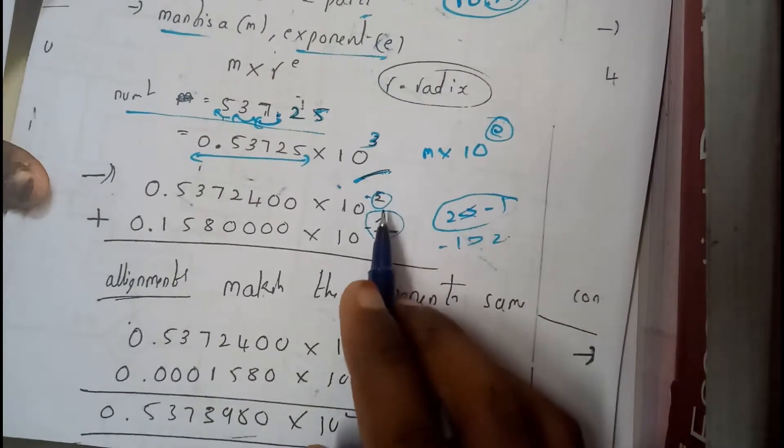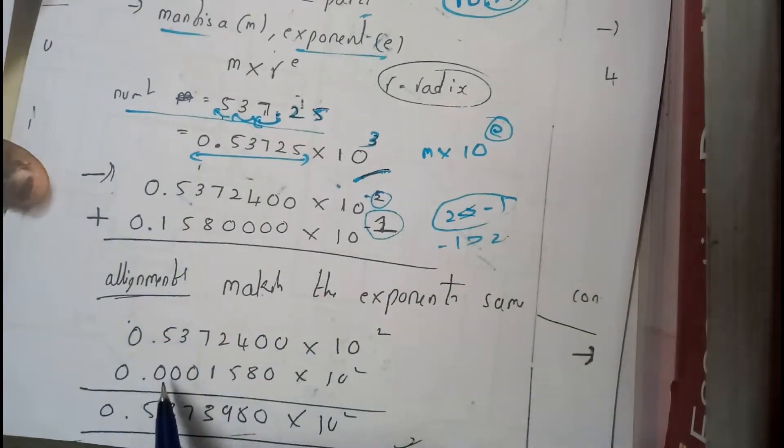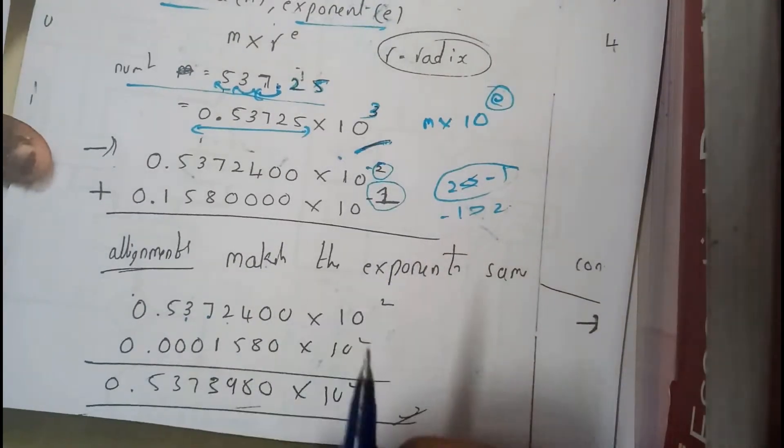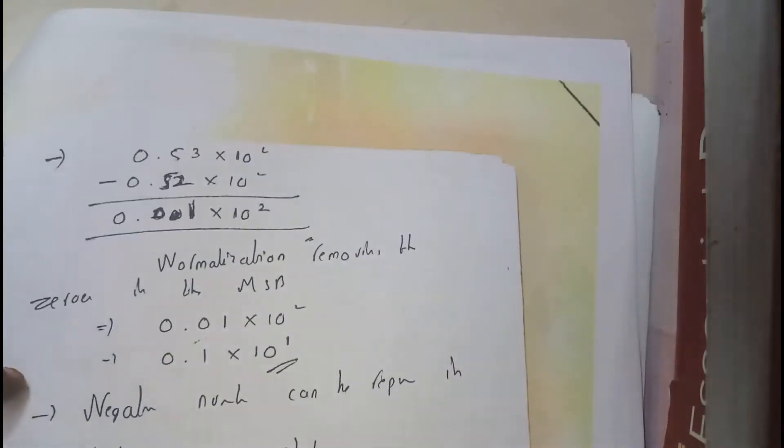You will be multiplying here with the minus 10 power 3. So this 5 will be moving like this: 0.000537. Just solve it yourself. You will be adding these two and this will be 10 square, so you'll be getting a result something like this.